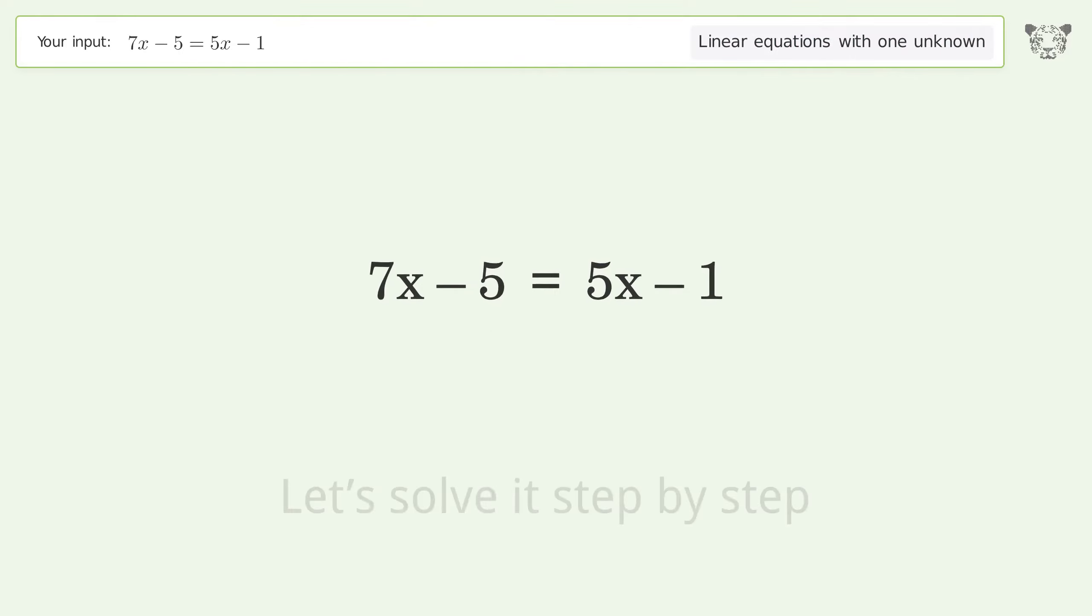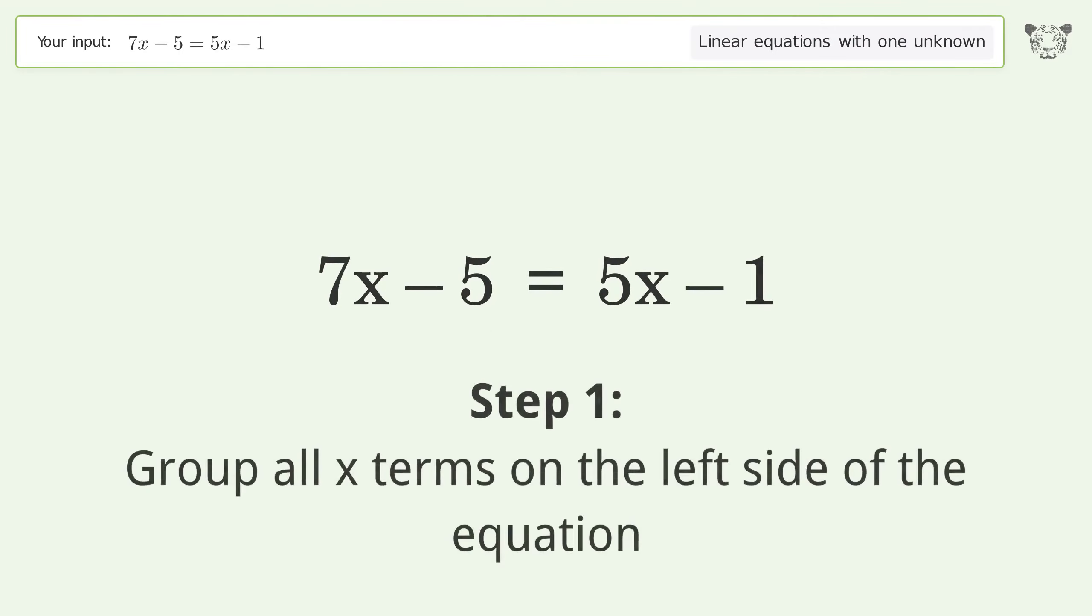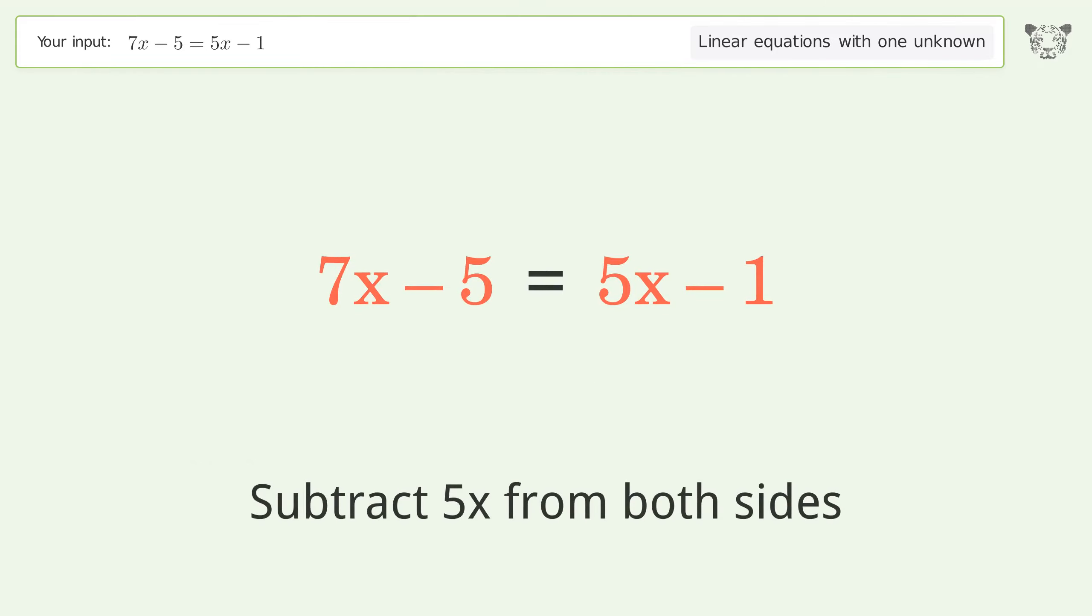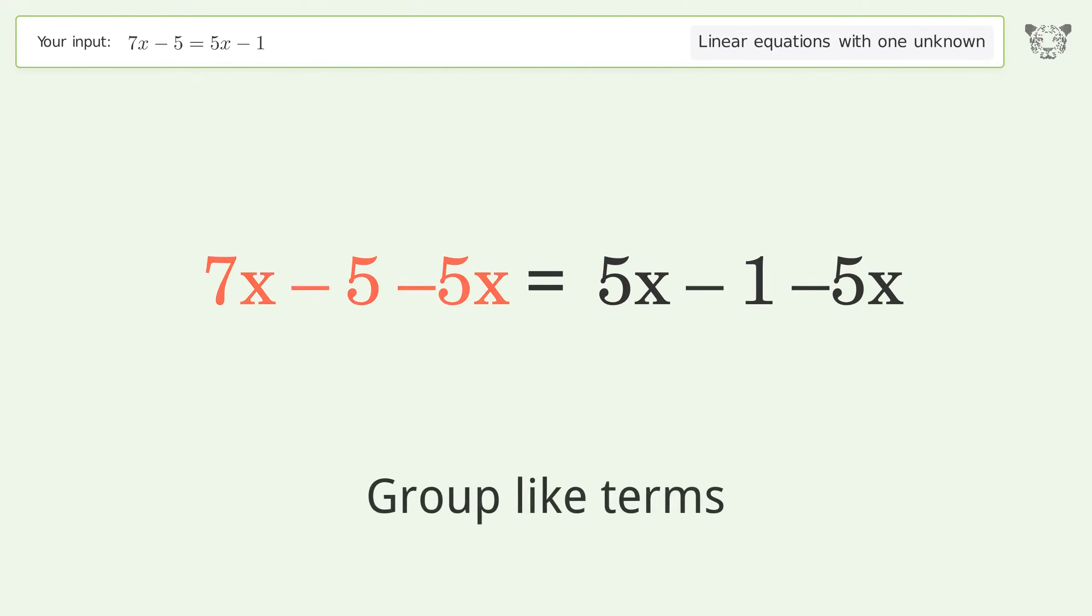Let's solve it step by step. Group all x terms on the left side of the equation. Subtract 5x from both sides. Group like terms.